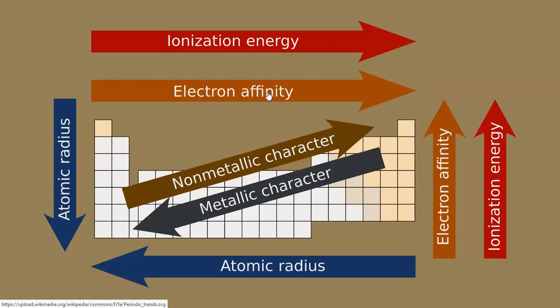With that, we complete the various physical properties in relation to the periodic table. First, the atomic radius is increasing down the group and decreasing across the period.